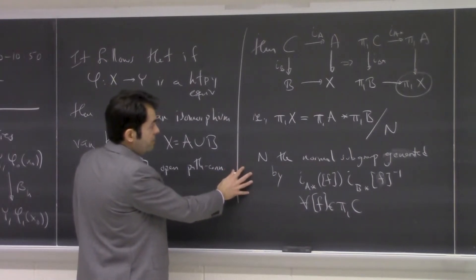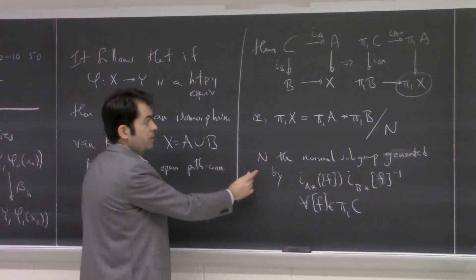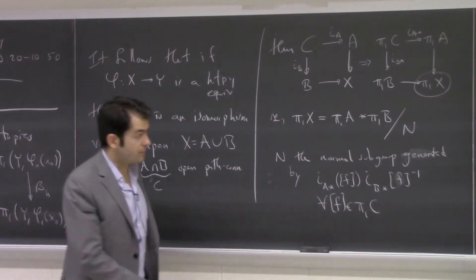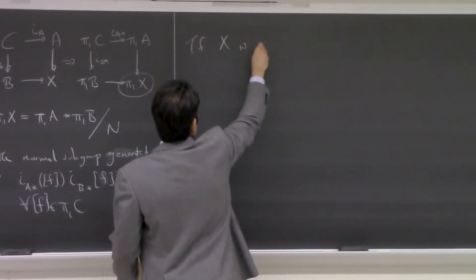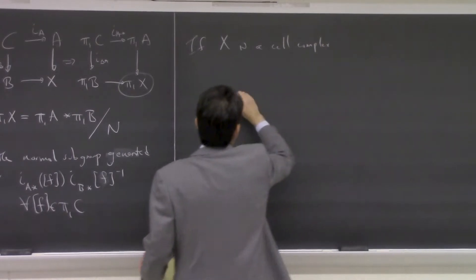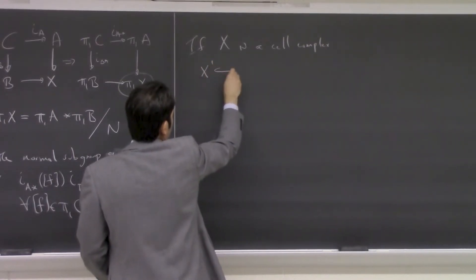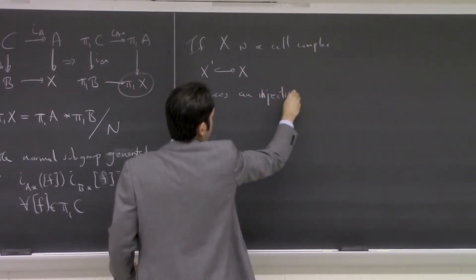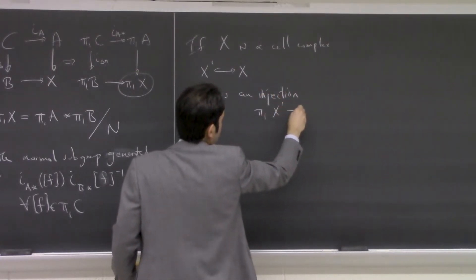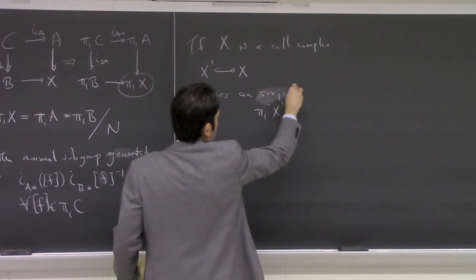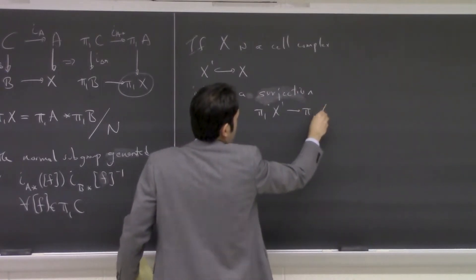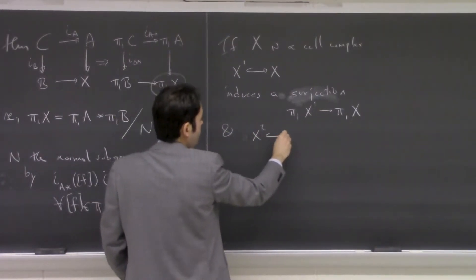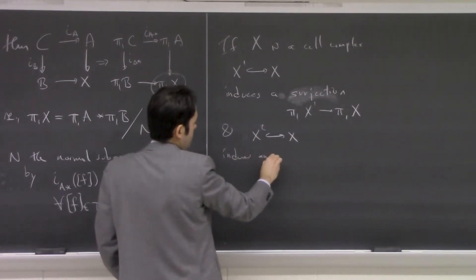We saw several examples of using van Kampen with two sets to compute a fundamental group, and in particular for cell complexes this works very well. If X is a cell complex, then the inclusion of the 1-skeleton induces a surjective map, so all generators of the fundamental group come from the 1-skeleton, and the inclusion of the 2-skeleton induces an isomorphism.